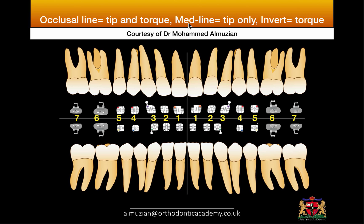There is also a variation where we take the bracket from one side and place it on the contralateral side — this is called crossing the midline, and it results in changing the tip only. Another way is to use the same bracket for the same tooth but place it upside down, as in the case of a palatally displaced lateral incisor. This is called inversion, and it results in a change in torque only.